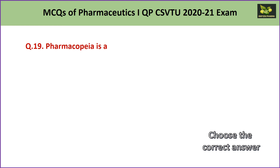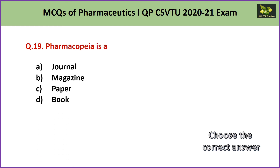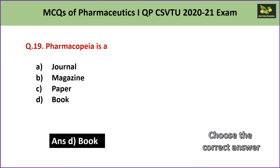Question number 19: Pharmacopoeia is A. journal, B. magazine, C. paper, or D. book. Many students get confused with journal, but the answer is D — book. Pharmacopoeia is a book.